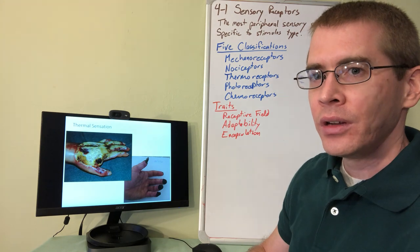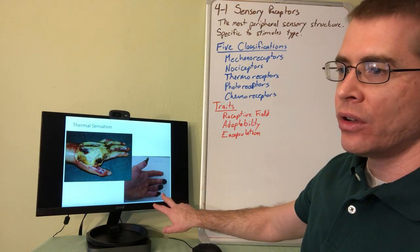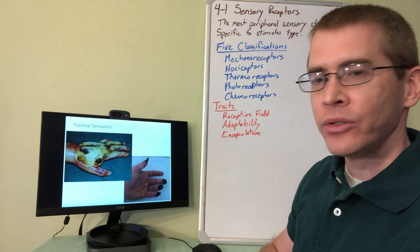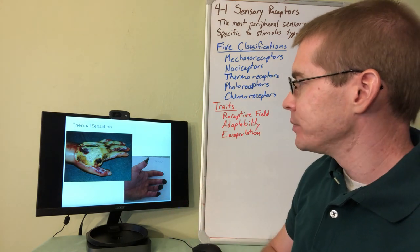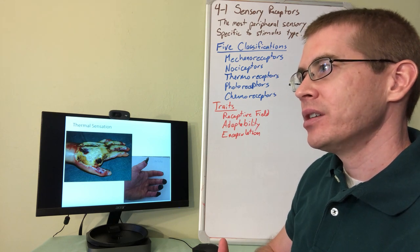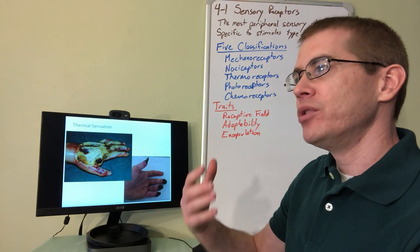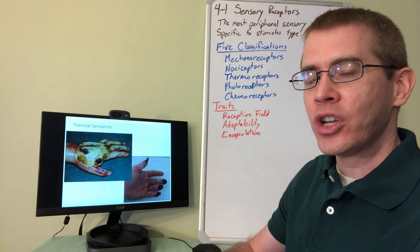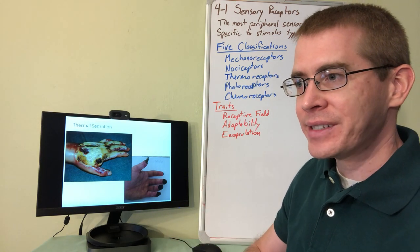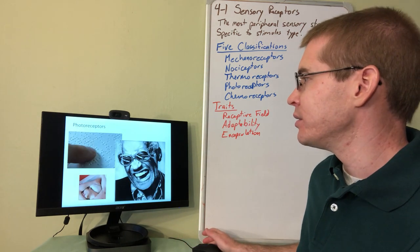Thermal sensation helps us avoid noxious thermal situations. This slide shows a full thickness burn on the back of someone's hand and frostbite from an individual climbing in the Himalayan mountains. Importantly, this type of damage is cumulative — if you get mild frostbite once, you're more prone to get it again. Exposure to these environments weakens the skin and capillaries on a permanent basis, so prevention is very important.